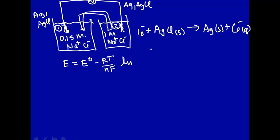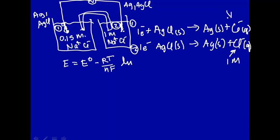And, on the other side, it's the same reaction. One electron, we'll write it as reduction, goes to silver plus Cl minus aqueous. So, on side 2, this concentration is 1 molar. On side 1, this concentration is 0.15 molar. So, we have a concentration gradient. So, this is a concentration cell.